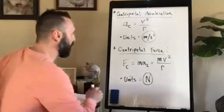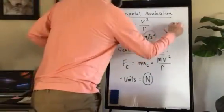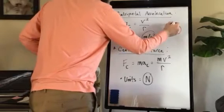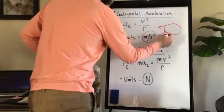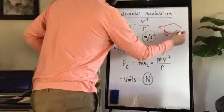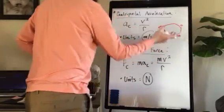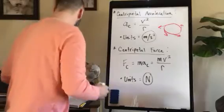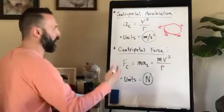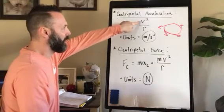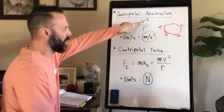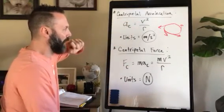An object moving around a circle, even at constant speed, is always changing direction, so it's always accelerating due to that change in direction. We call this centripetal acceleration, and we calculate it with the linear velocity squared divided by the radius.